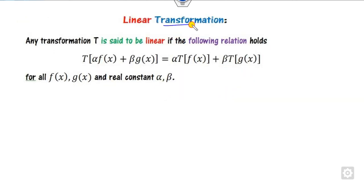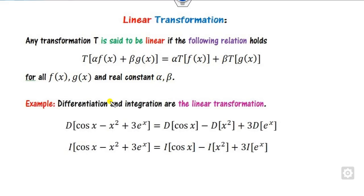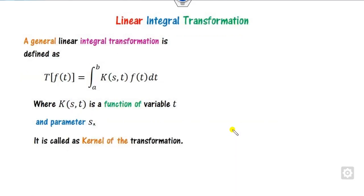This transformation is said to be linear if it satisfies the property where alpha and beta are real constants. In general, we can say it is a linear integral transformation when equation number 1 holds, where A and B are the limits. K is called the kernel of the transformation, where it is a function of these variables.